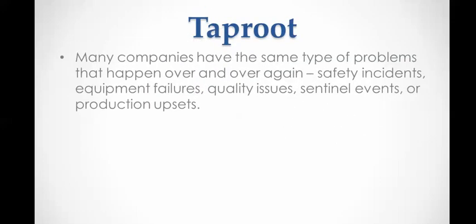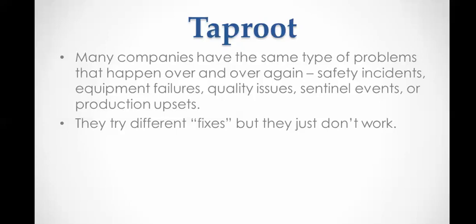Many companies have the same type of problems that happen over and over again — safety incidents, equipment failures, breakdowns, quality issues, sentinel events, or production upsets. They try different ways of fixing them, but sometimes they don't always work. As we know in the manufacturing industry, things don't always work the way you want them to, so we've got to try different ways.